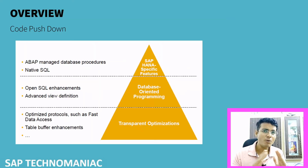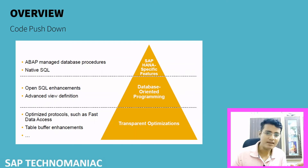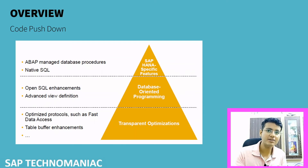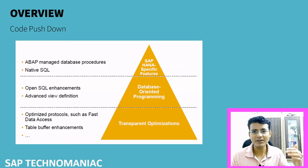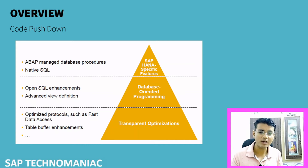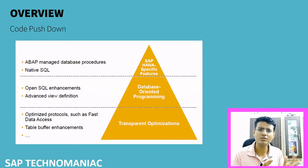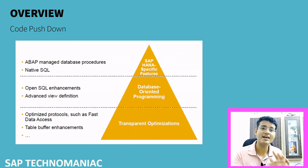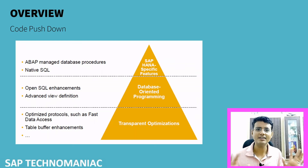To achieve code push down, some things are done automatically by SAP — we call this transparent optimization. For example, SAP has improved the protocols between the application layer and the database layer for faster data transfer and table improvements. These are done internally by SAP and we don't need to worry about them once we use the HANA database.